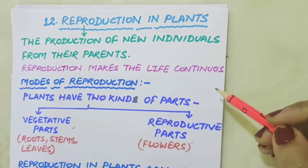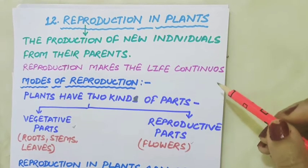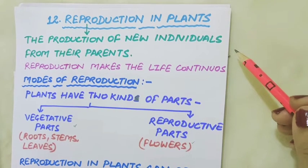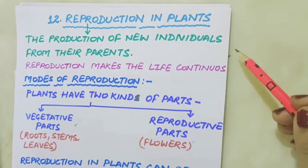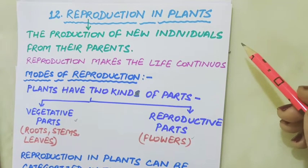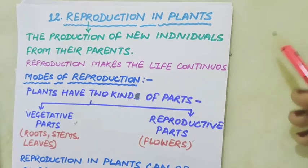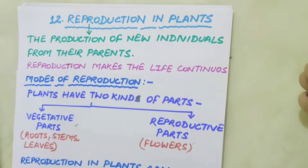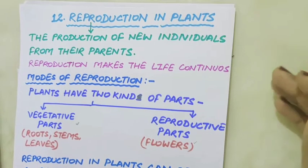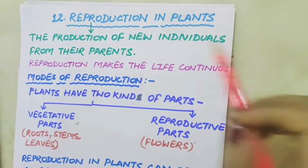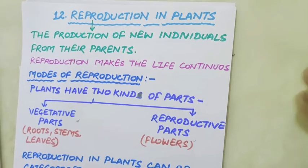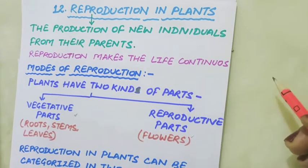Good morning everyone. Today we are going to discuss chapter 12 of your science book: Reproduction in Plants. All living organisms, including plants and animals, have the capability to produce new individuals. This process of producing a new organism from an existing one of the same species is called reproduction. Reproduction is essential for the continuity of the species.